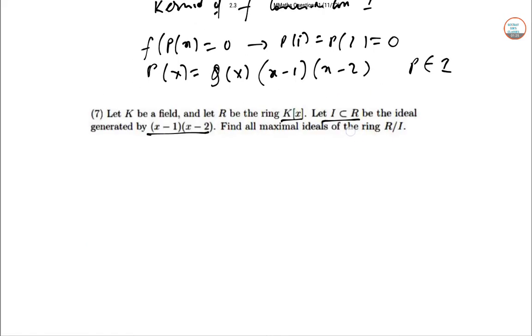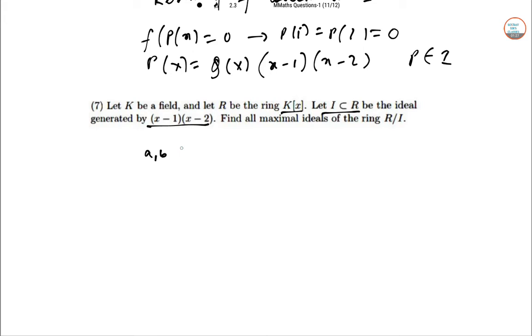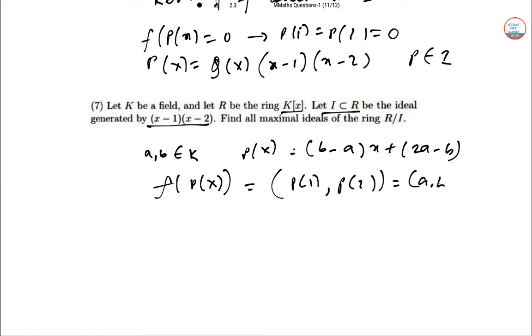In these cases, for A,B∈K, consider P(x)=(B-A)x+(2A-B). Then F(P(x))=(P(1), P(2))=(A,B). So F maps K[x] onto K².